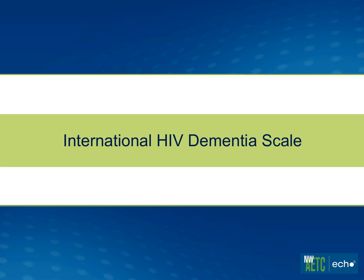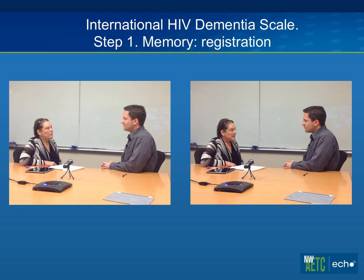Now we're going to do the International HIV Dementia Scale, which is for people with lower education — they don't have to write anything, but they do demonstrate motor speed and psychomotor speed. First is memory registration. Brian, I'm going to give you four words to recall: dog, hat, bean, and red. Can you repeat that? Dog, hat, bean, red. Remember that — I'm going to ask you later on.